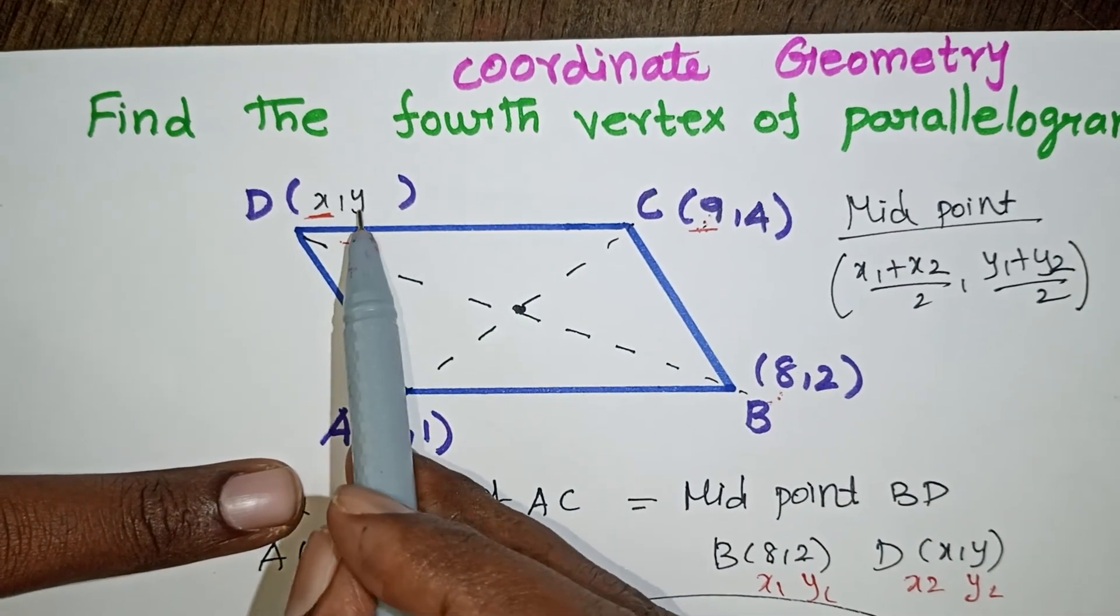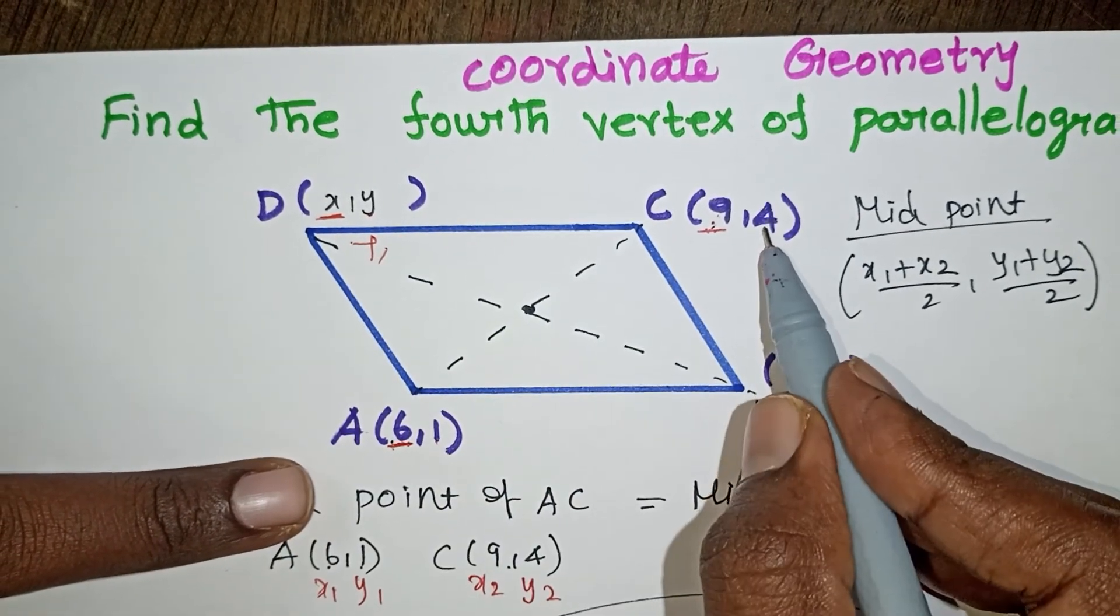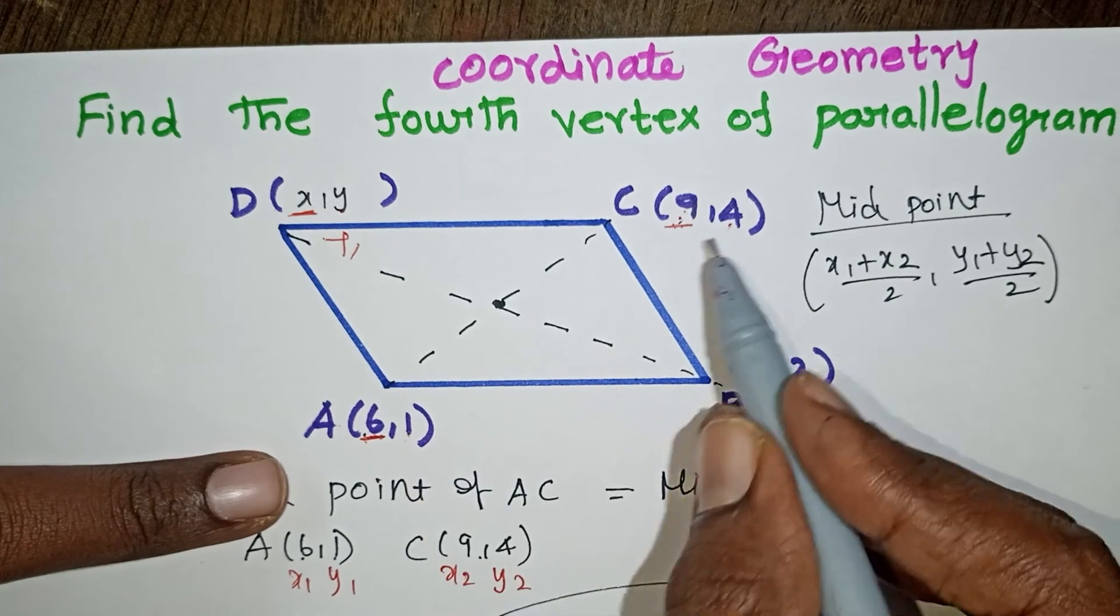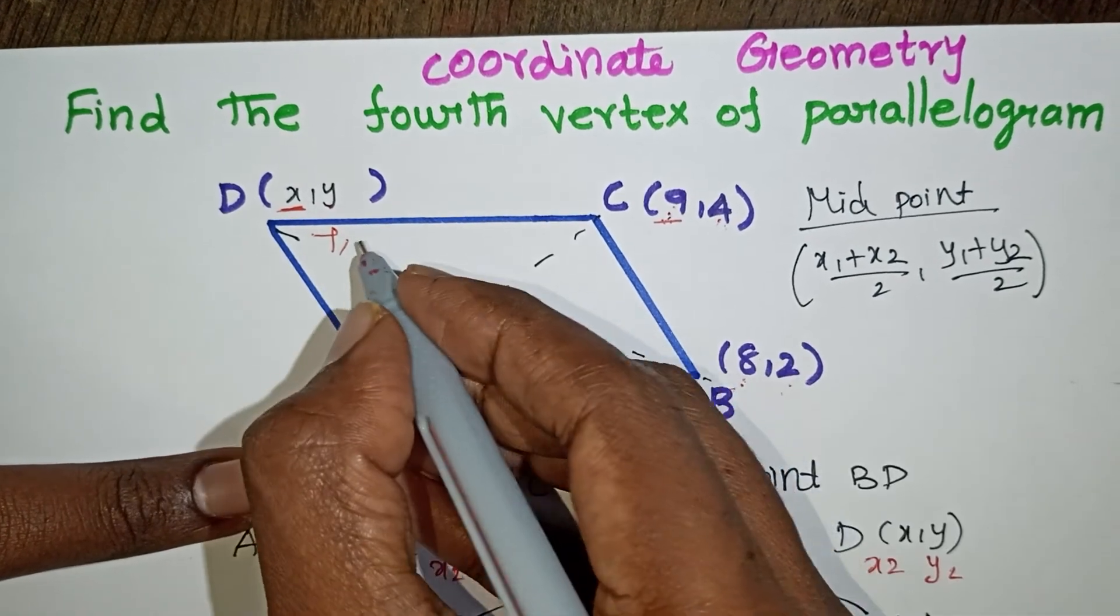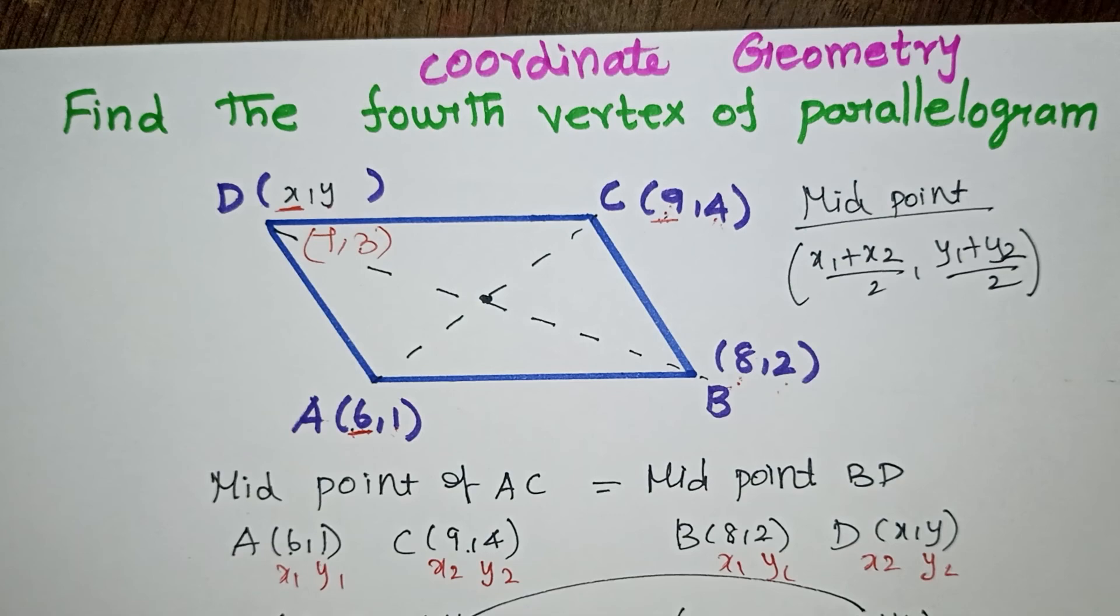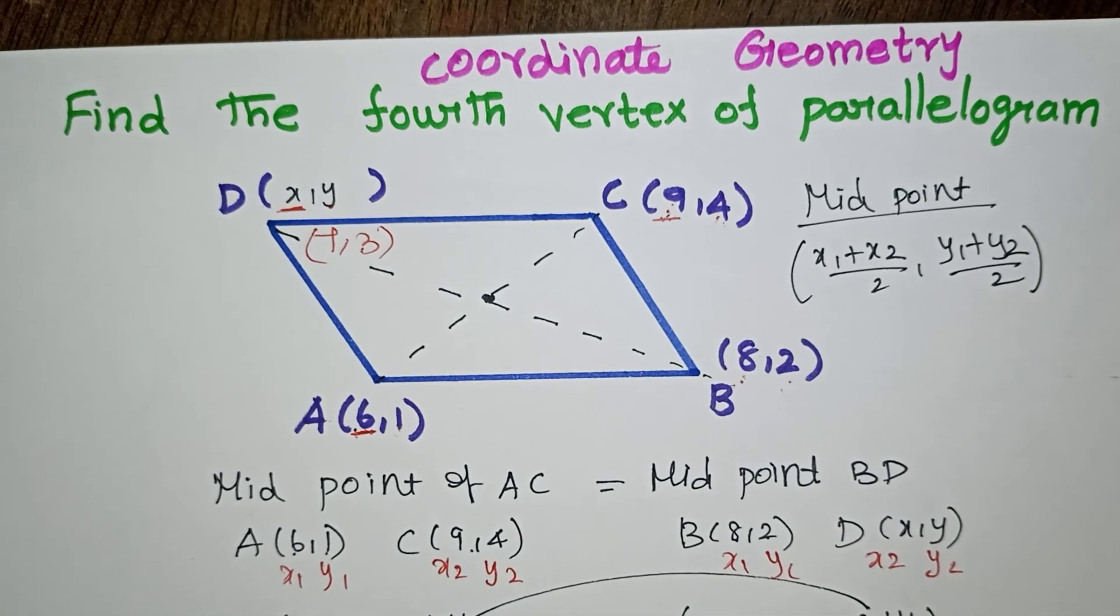To get the Y value, add 1 and 4, then subtract 2. So 1 plus 4 is 5, and 5 minus 2 gives 3. So you get 7 comma 3 correctly. This is how you can find it for a one mark question.